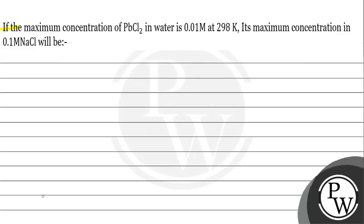Hello, let's read this question. The question says that the maximum concentration of PbCl2 in water is 0.01 molar at 298 Kelvin. Its maximum concentration in 0.1 molar NaCl will be.